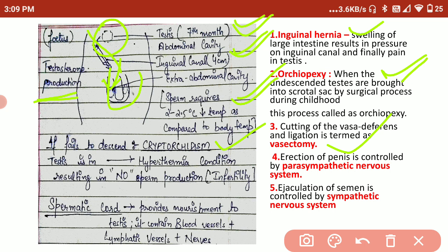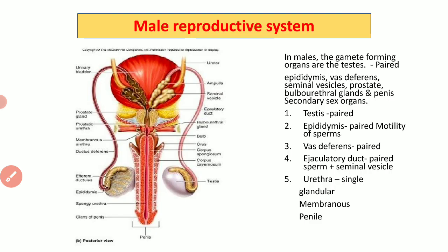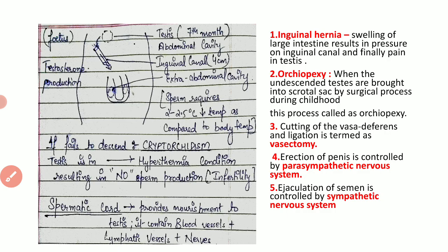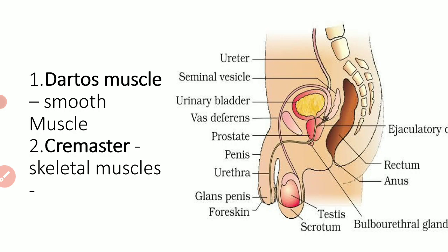Vasectomy means cutting and ligation of the vas deferens so that fertilization cannot occur even though copulation occurs. When the vas deferens is cut, sperm produced in the testis cannot reach the penis and hence no fertilization will occur. Vasectomy is a reversible process — the ligation can be undone if needed. The erection of the penis is controlled by the parasympathetic nervous system, while ejaculation of semen is controlled by the sympathetic nervous system.